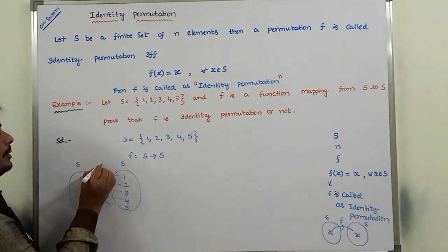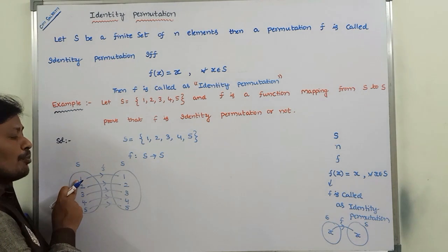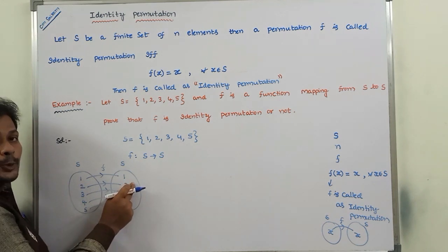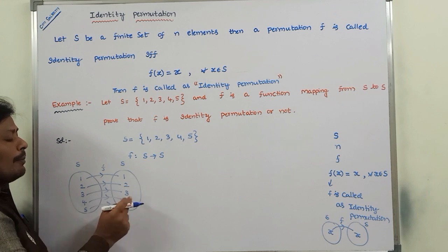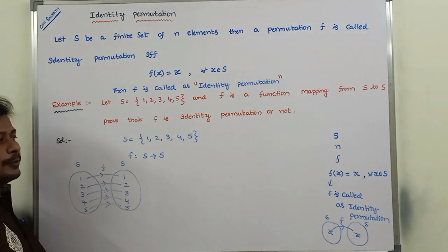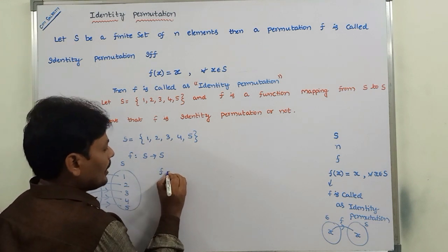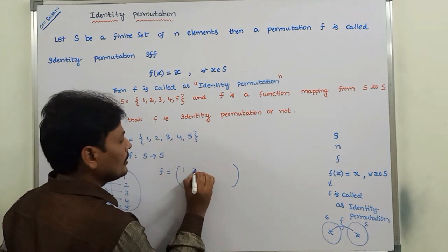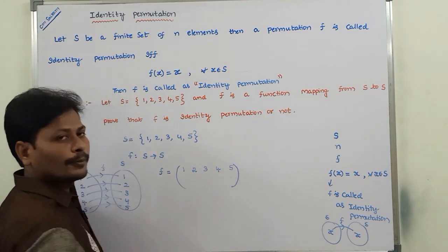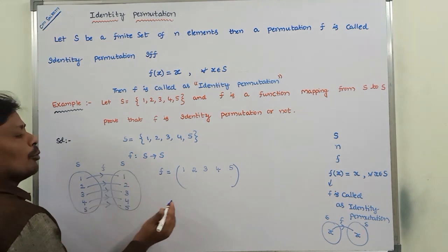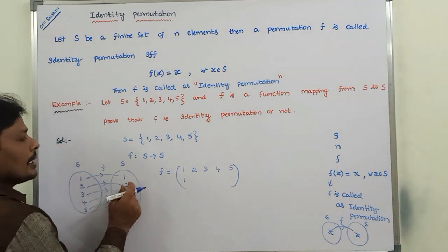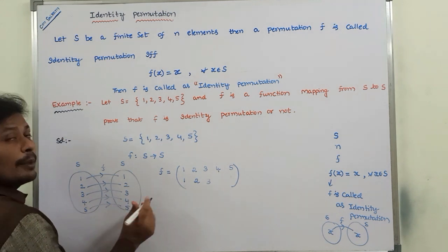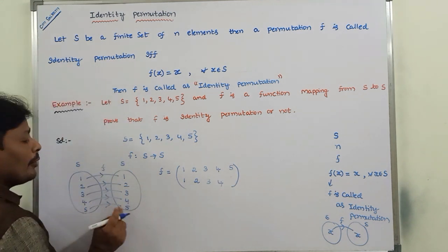Through the function f, 1 is mapped to 1 — that means 1's image is 1; 2's image is 2; 3's image is 3; 4's image is 4; and 5's image is 5. So f can be defined with the elements of set S in the first row as 1, 2, 3, 4, 5 and in the second row as 1, 2, 3, 4, 5.